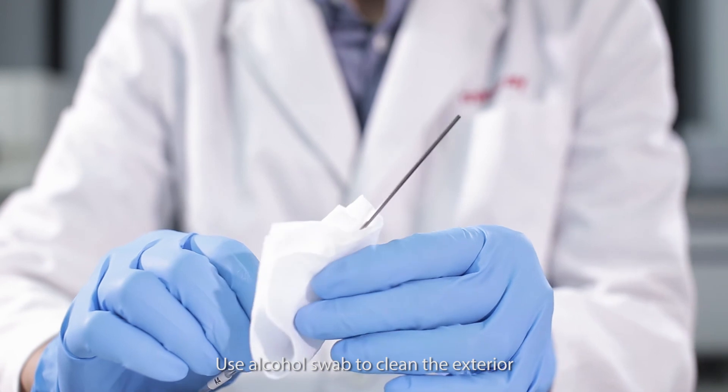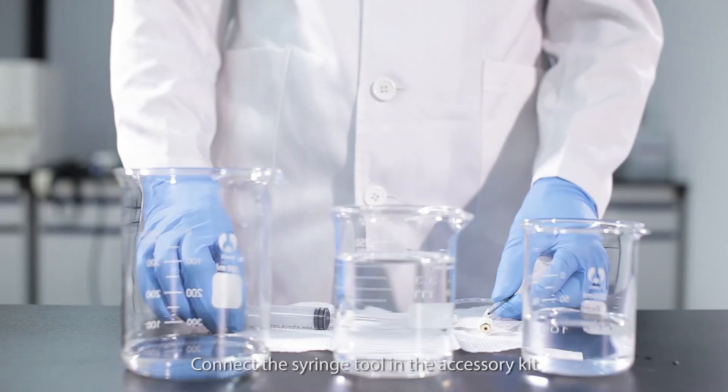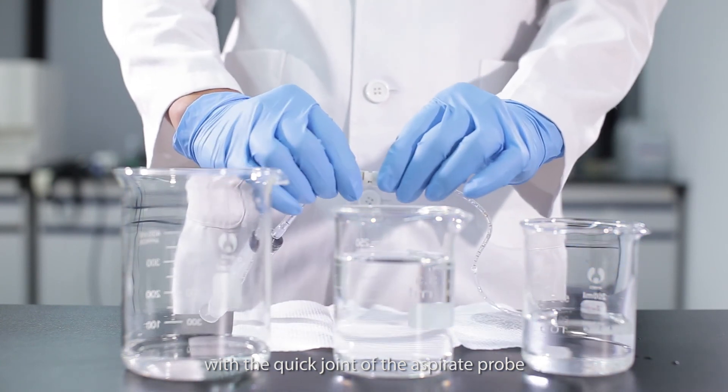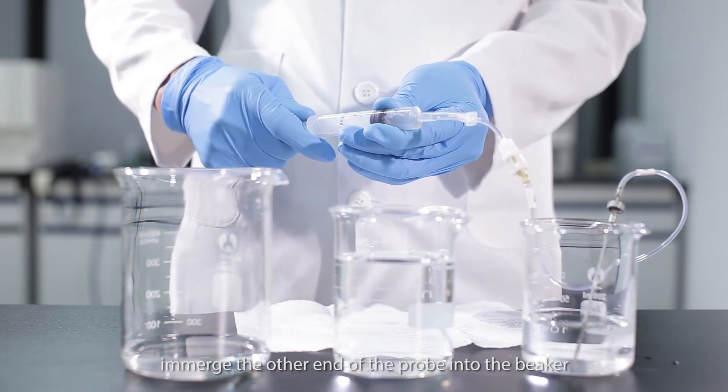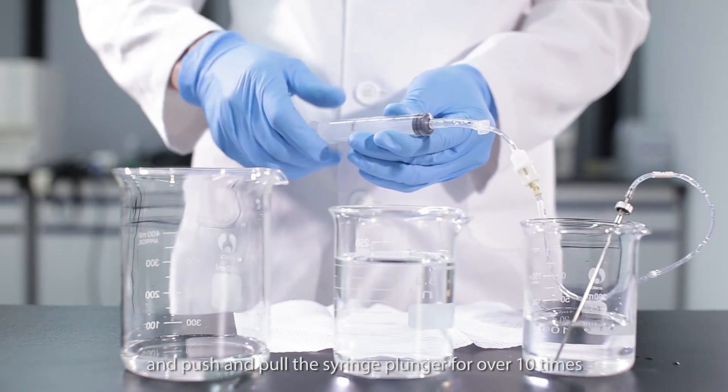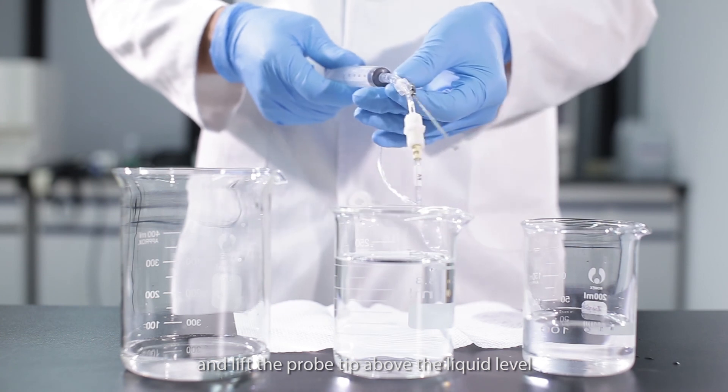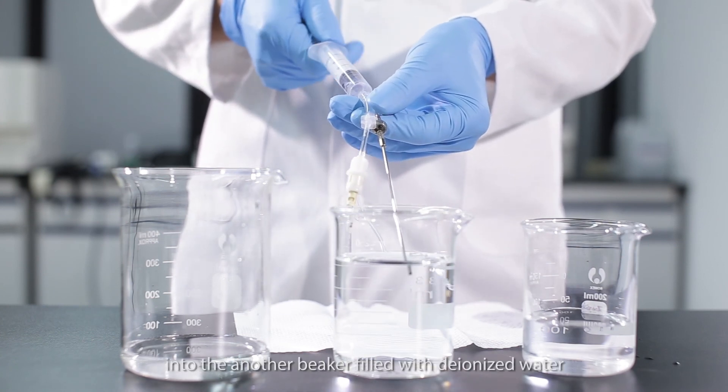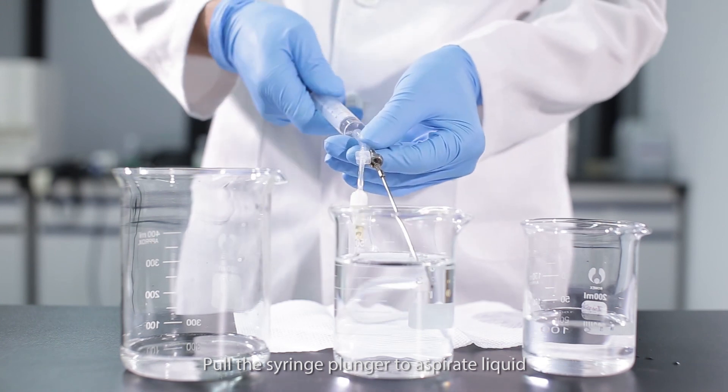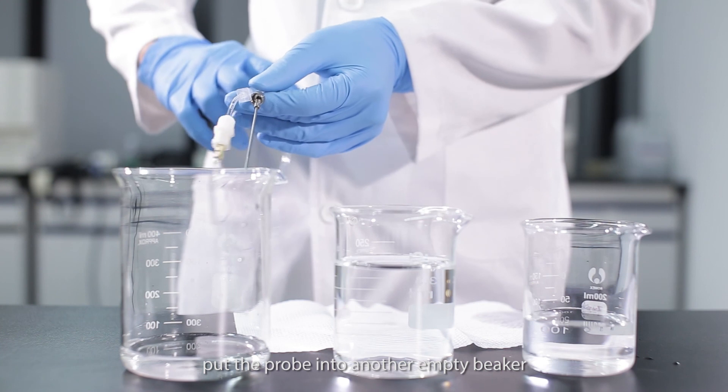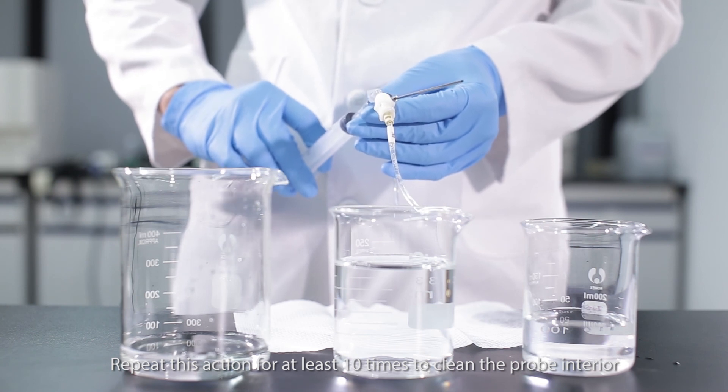Use alcohol swab to clean the exterior of the replaced aspirate probe and use the unclogging device to clean its interior. Connect the syringe tool in the accessory kit with a quick joint of the aspirate probe. Prepare a beaker full of CD80 wash solution. Emerge the other end of the probe into the beaker and push and pull the syringe plunger for over 10 times. Discharge the liquid in the tube and lift the probe tip above the liquid level. Emerge the probe tip into another beaker filled with deionized water or distilled water. Pull the syringe plunger to aspirate liquid. Put the probe into another empty beaker and push the syringe plunger to discharge the liquid. Repeat this action for at least 10 times to clean the probe interior.